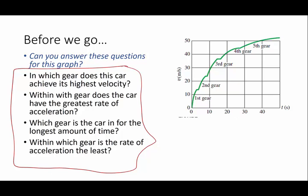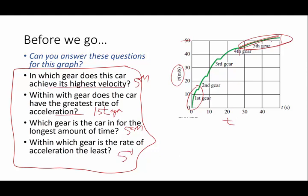Okay, let's go through these. In which gear does the car achieve its highest velocity? Well, highest velocity is on this side, so where is it going the fastest? Well, that's going to be in fifth gear. Within which gear does the car have the greatest rate of acceleration? That's going to be the biggest slope. That's going to be first gear. Which gear is the car in for the longest amount of time? Time is down here on this axis. That's going to be fifth gear. Biggest amount of time is going to be in the fifth. And within which gear is the rate of acceleration the least? That's fifth gear. The slope has straightened out. There's not as much acceleration in the fifth gear as there was in the others.